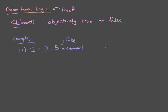It's also worth pointing out that something like '2 plus 2' is not a statement. It's not really making any assertion that you can judge whether it's true or false. You can judge whether '2 plus 2 is 5' is true or false because it's making an assertion — the equals sign is an assertion, saying that this is the same as this. '2 plus 2' alone is not making any such claim, so it is not a statement.